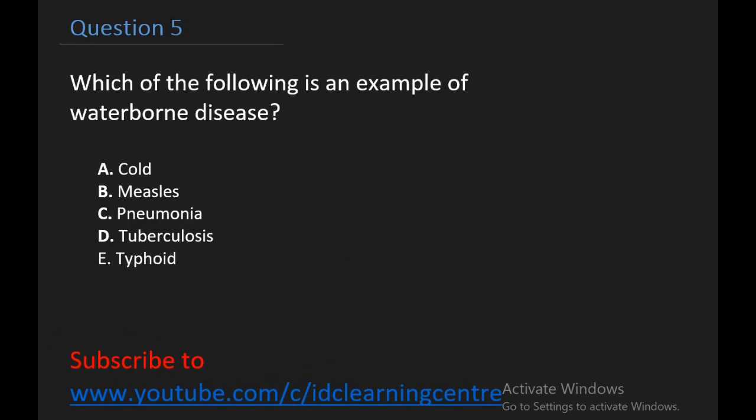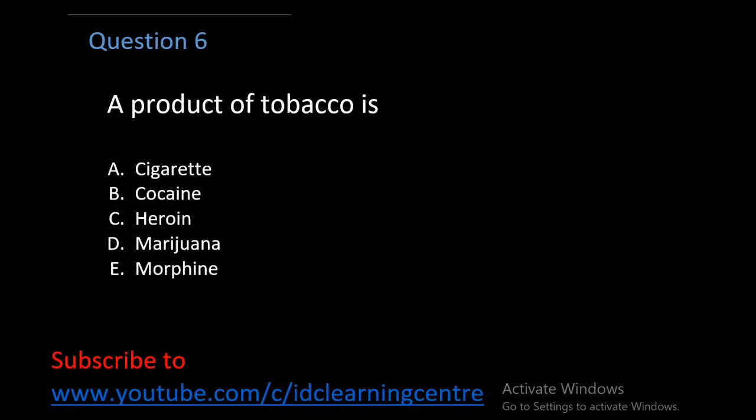Question 5: Which of the following is an example of waterborne disease? Is it Cold, Measles, Pneumonia, Tuberculosis, or Typhoid? The right answer is Typhoid. You can get Typhoid from unclean food or unclean water. The right answer is E. Question 6: A product of tobacco is what? A. Cigarette, B. Cocaine, C. Heroin, D. Marijuana, E. Morphine. The right answer is A. Cigarette is a product of tobacco.